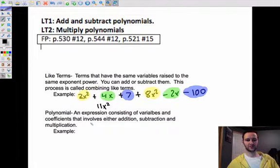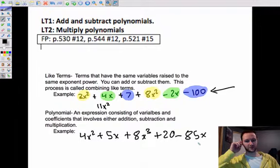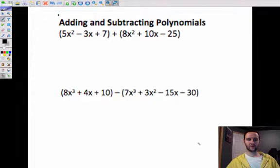A polynomial is an expression consisting of variables and coefficients that involves either addition, subtraction, and multiplication. So actually right here, that whole thing right there is a polynomial. It's pretty much just anything where you have different terms with different coefficients that are added, multiplied, subtracted from each other. So just any series of different terms.